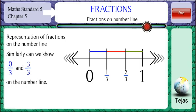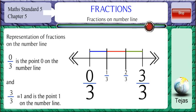Similarly, can we show 0 by 3 and 3 by 3 on the number line? 0 by 3 is the point 0 on the number line because 0 divided by 3 is 0, and 3 by 3 is the point 1 on the number line. 3 divided by 3 is 1.